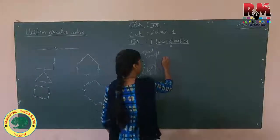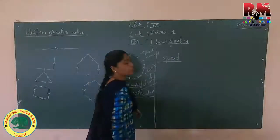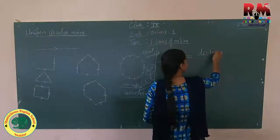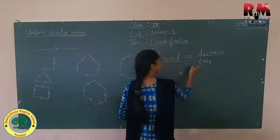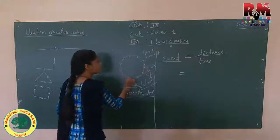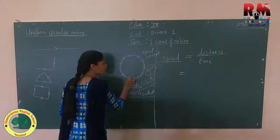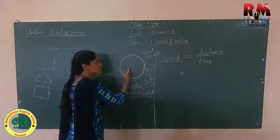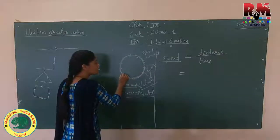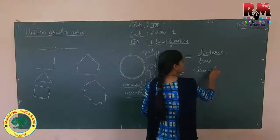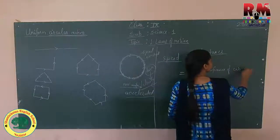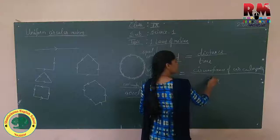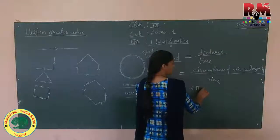So this is Uniform Circular Motion. Now if we want to measure speed for any circular motion, the equation is the same: speed equals distance upon time. But here the distance is not a straight path — it is a circular path. The object is moving along the circumference of the circle, so the distance covered is equal to the circumference of the circular path.